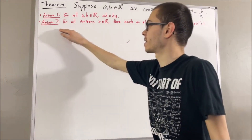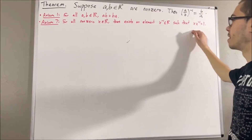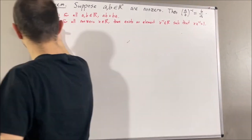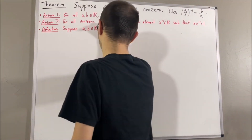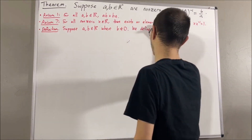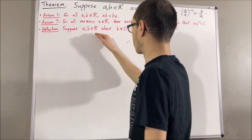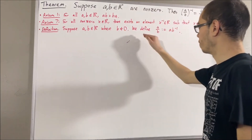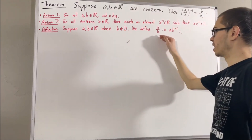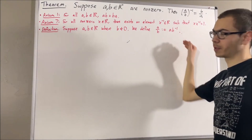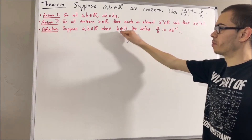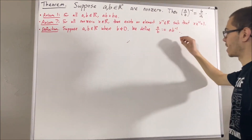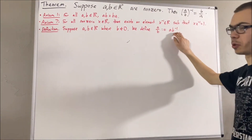Now using axiom 7, our definition of division is as follows. Suppose A and B are real numbers where B is not equal to 0. We define A over B to be A times the reciprocal of B. And notice, since B is non-zero, then by axiom 7, we can make sense out of the reciprocal of B.